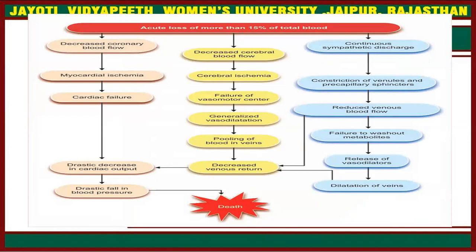It also causes decreased cerebral blood flow and failure of the vasomotor center, which causes generalized vasodilation and pooling of blood in veins, decreased venous return, decrease in cardiac output, falling pressure, and at last death. More than 15% blood loss also causes continuous sympathetic discharge, constriction of venous and pre-capillary sphincters, reduced venous blood flow, failure to wash out metabolites, release of vasodilators, dilation of veins, decreased venous return, decreased cardiac output, drastic falling blood pressure, and death.